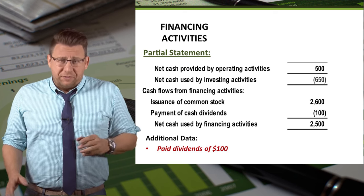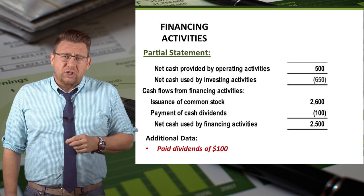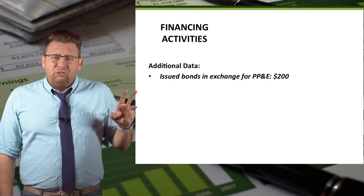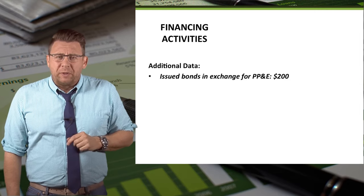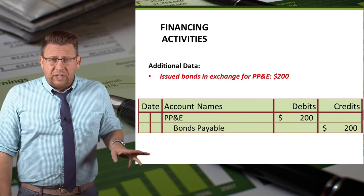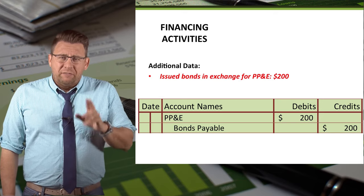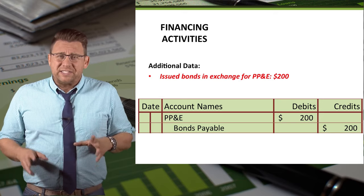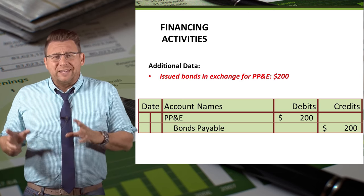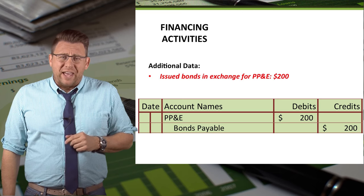That's it for this section, but let me explain why the other long-term liability item isn't listed here. We issued bonds in exchange for property, plant, and equipment. As shown in the journal entry, the cash account is not involved. This is called a non-cash investing and financing transaction, and there's a separate video that explains how these are reported on the statement of cash flows.